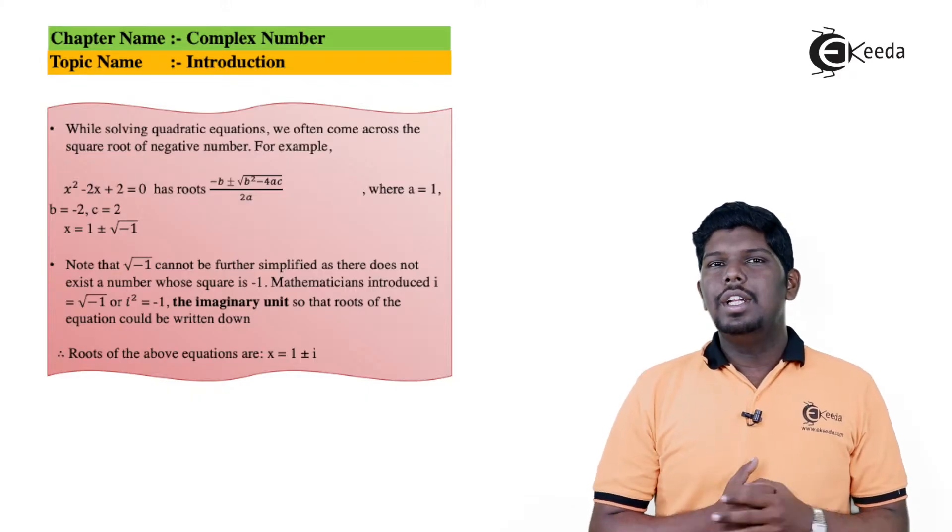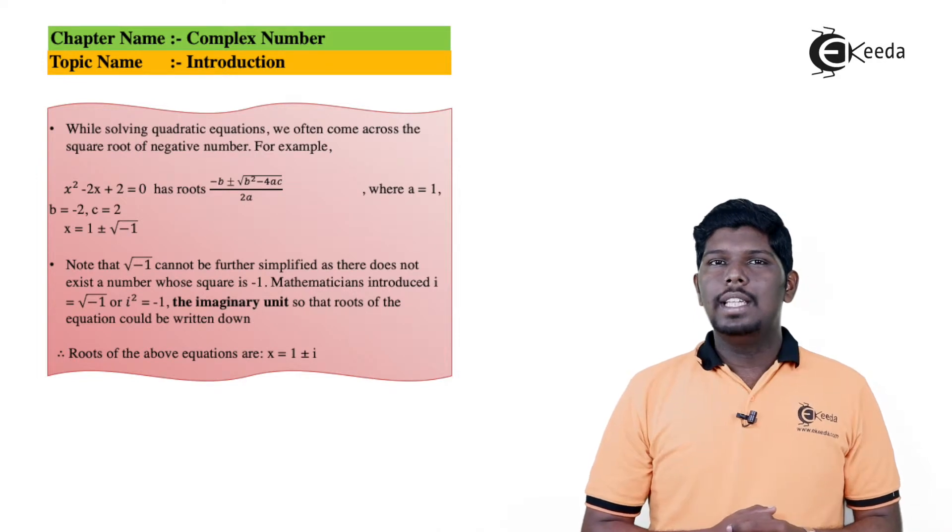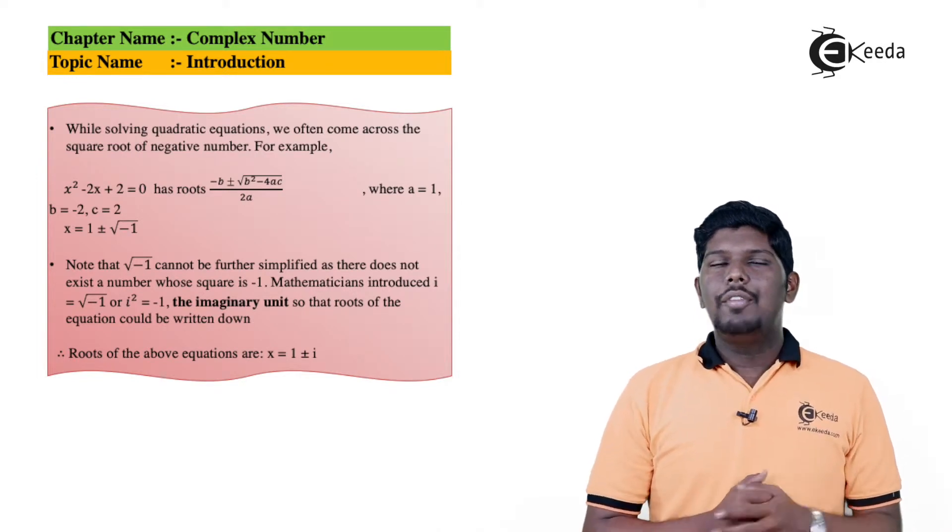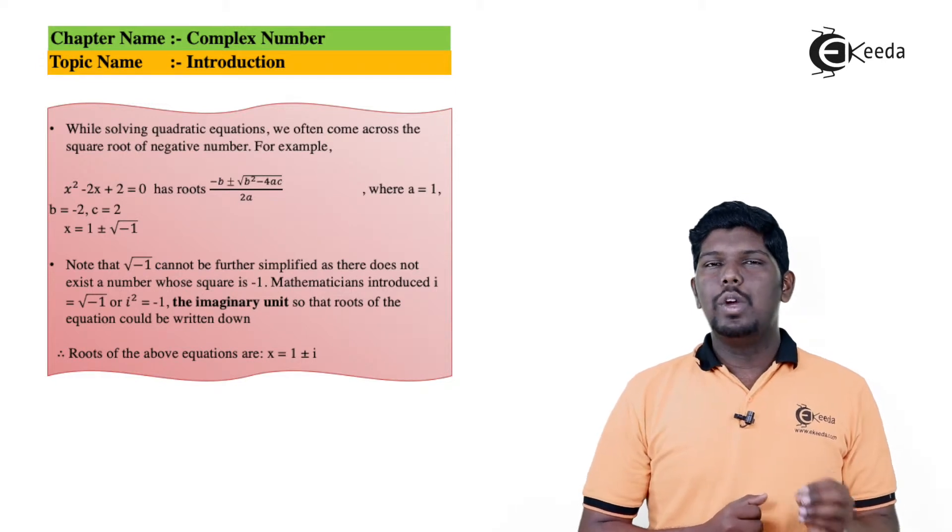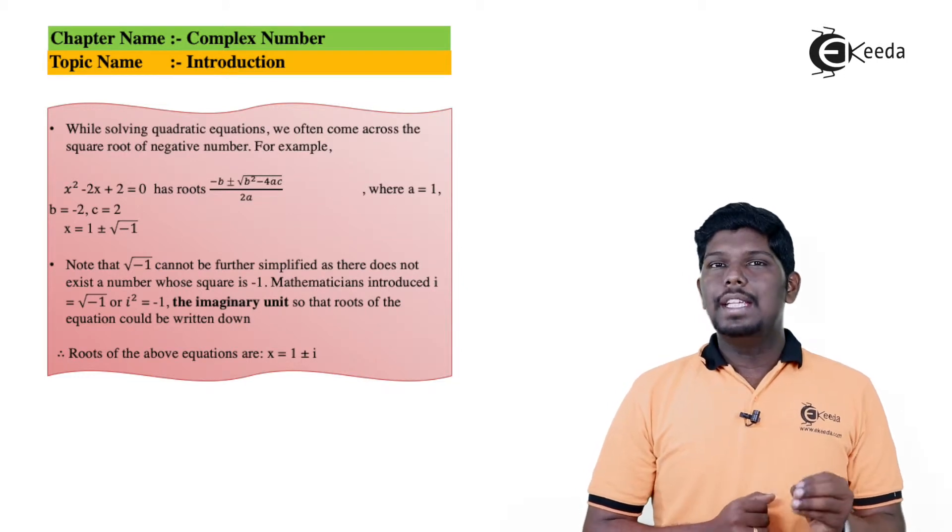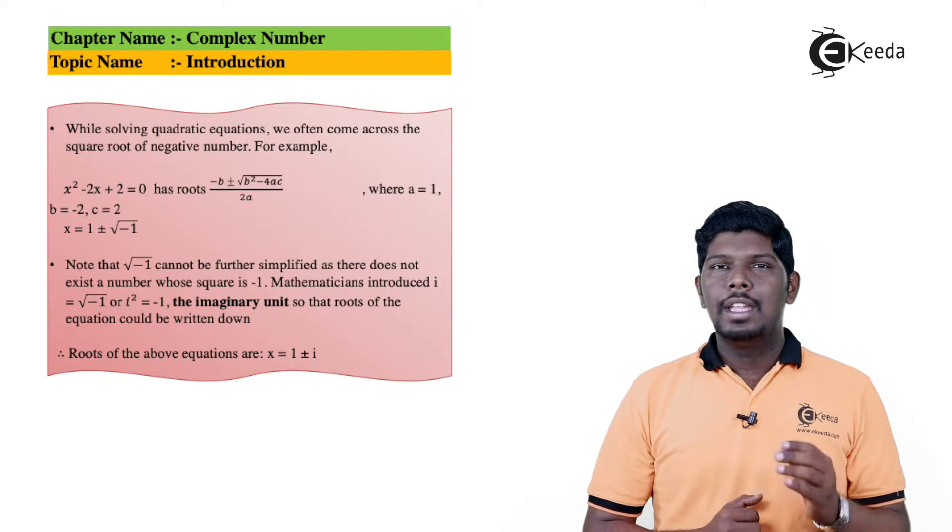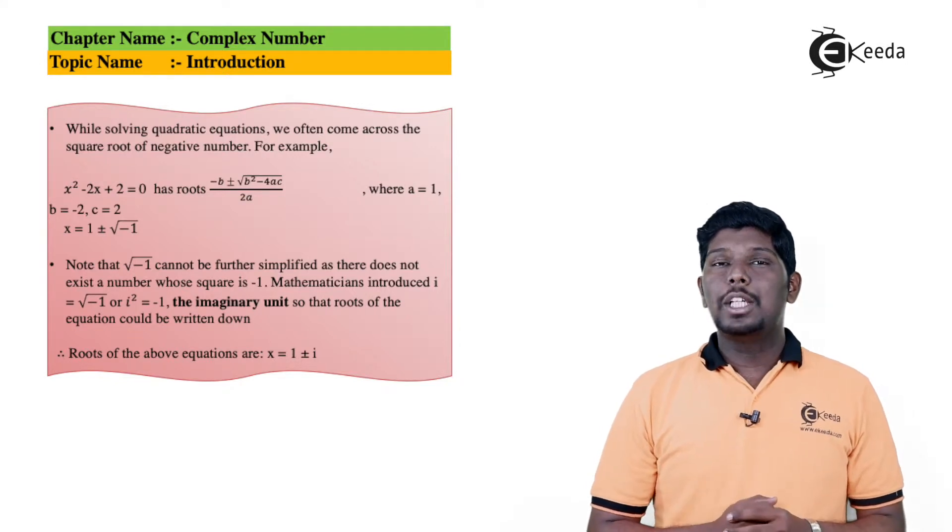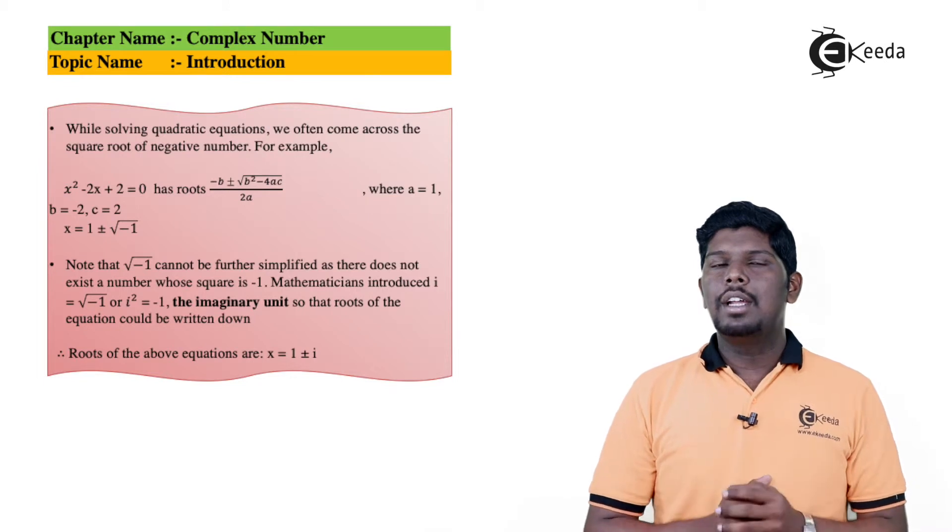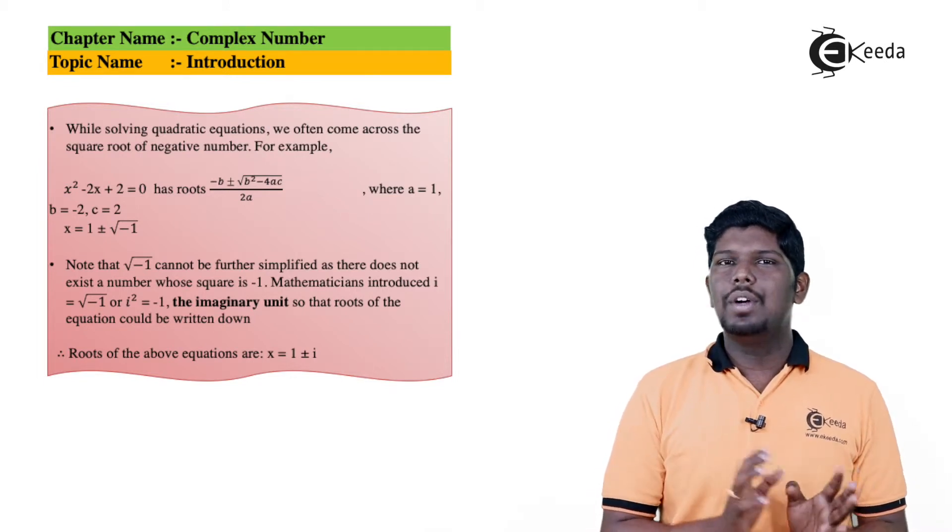In previous standards, whenever you solve quadratic functions, one thing we often come across is the square root of negative numbers. For example, if we have a quadratic function x² - 2x + 2 and solve this by formula method, that is -b ± √(b² - 4ac) / 2a, the value we will get is 1 ± √(-1). Here we say that the function is imaginary. Till now we used to say the given function is imaginary.